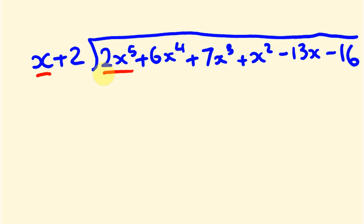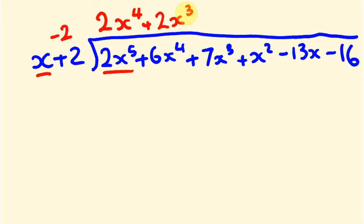First off, x goes into 2x to the 5 a total of 2x to the power of 4 times — that's our first term. The next terms will step down in power: x cubed, x squared, x, and then a constant. Our inverse of positive 2 is negative 2. Minus 2 times 2x to the 4 is minus 4x to the 4, and adding that to 6x to the 4 gives 2x to the 4, which we drop a power to write as 2 for the x cubed term. Then minus 2 times 2x cubed is minus 4x cubed, plus 7x cubed gives positive 3, written as 3 for the x squared term.